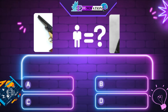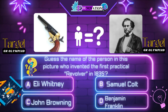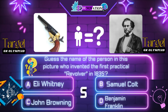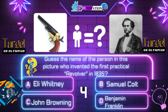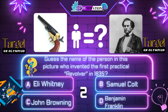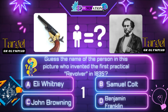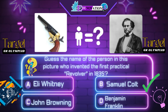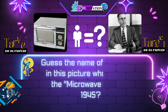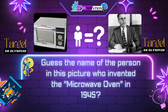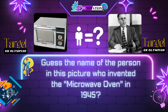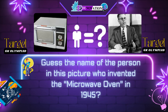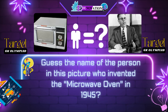Now next question. Guess the name of the person in this picture who invented the first practical revolver in 1835. Your options are: A. Eli Whitney, B. Samuel Colt, C. John Browning, D. Benjamin Franklin. Time's up. Correct answer is B. Samuel Colt.